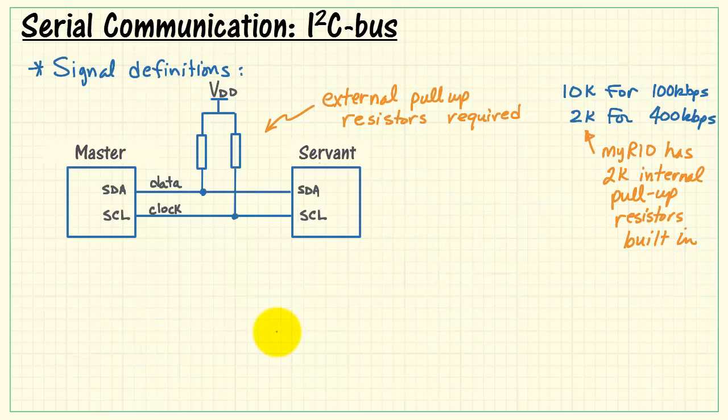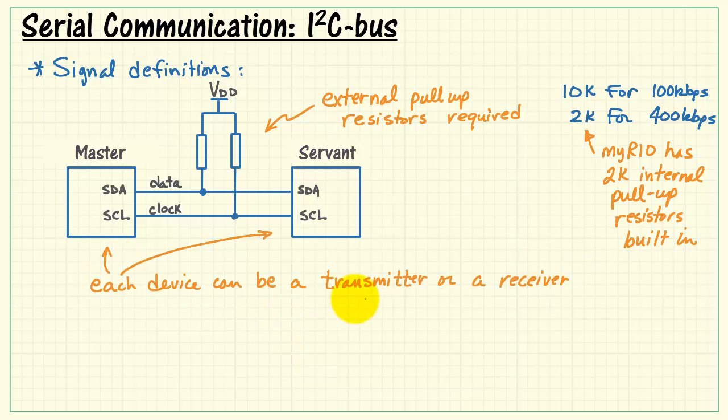MyRIO has the 2k internal pull-up resistors already built in, so no need to attach your own devices.